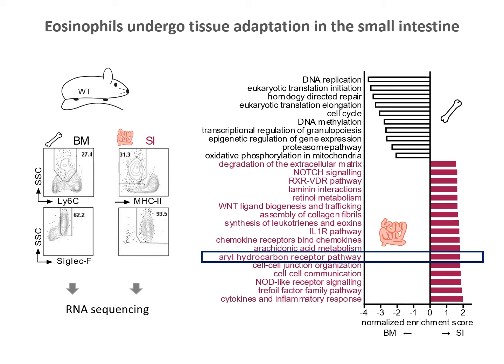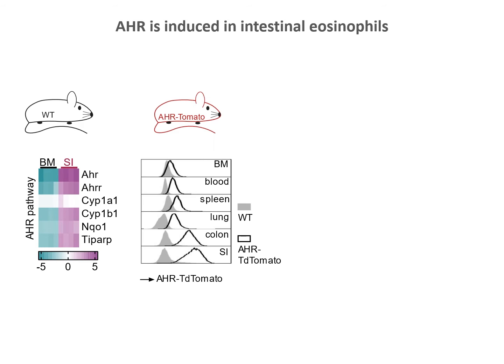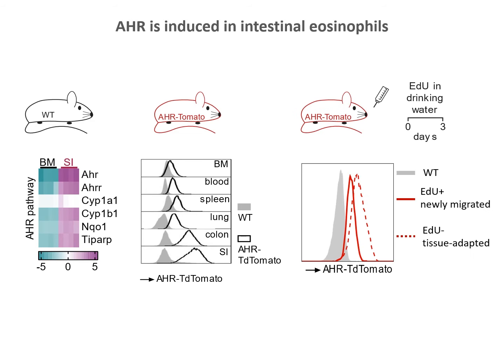AhR is a ligand-activated transcription factor with important roles in gut physiology. We confirmed high AhR expression transcriptionally and in reporter mice, and showed that eosinophils upregulate AhR after migration into the intestine.